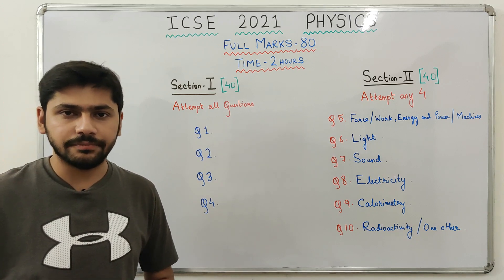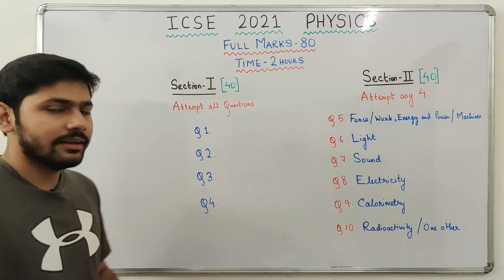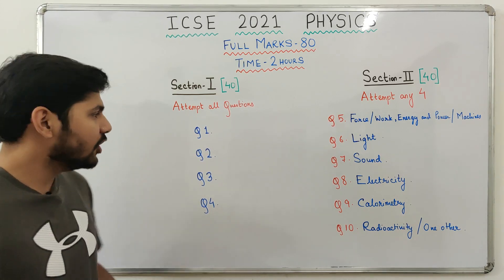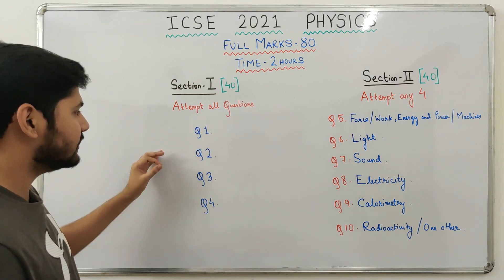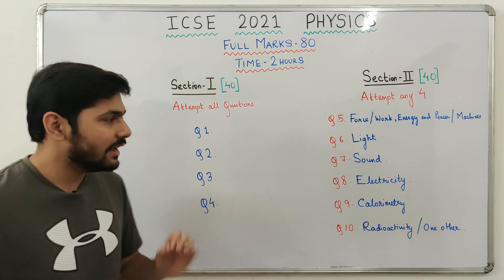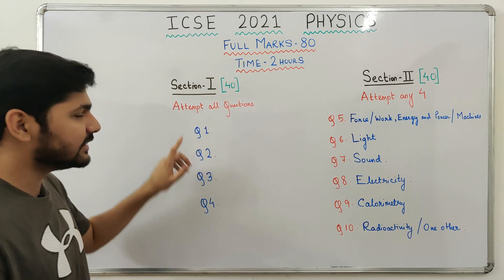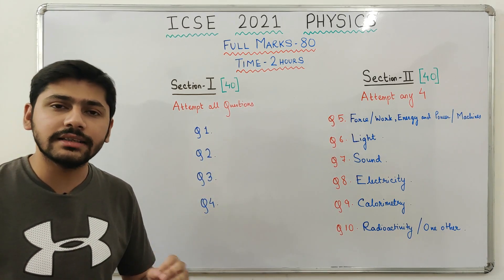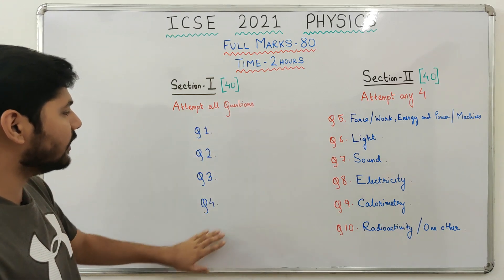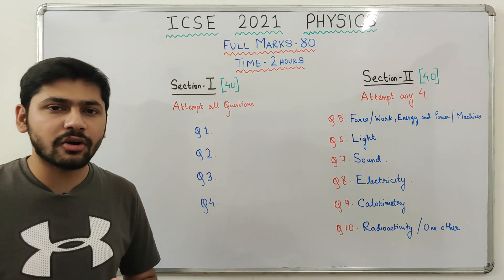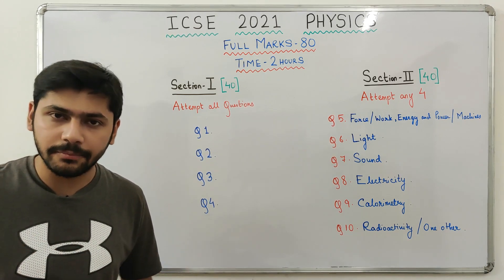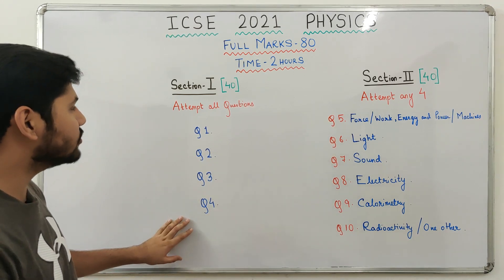Section 1 is 40 marks and is compulsory — you must attempt all questions. You will get 4 questions of 10 marks each, giving 4 x 10 = 40 marks. Generally, each question has 5 sub-parts of 2 marks each. There is no fixed chapter combination for Section 1; questions are asked from all chapters jumbled up.